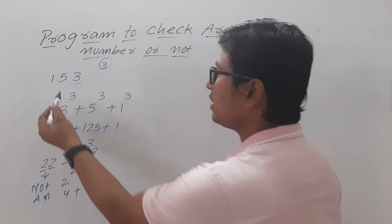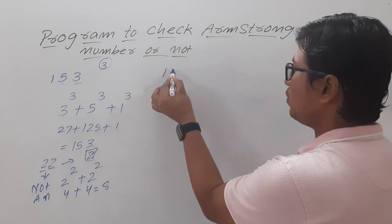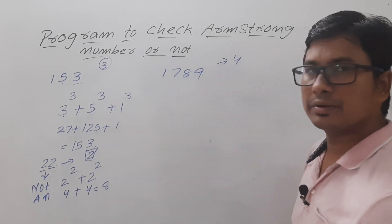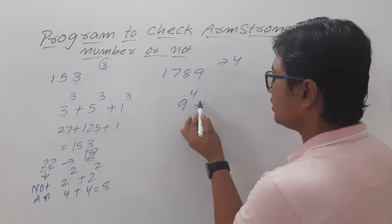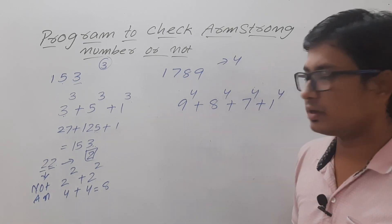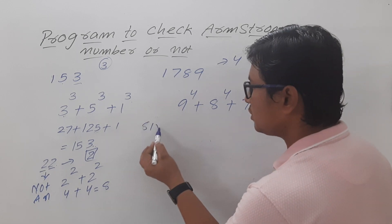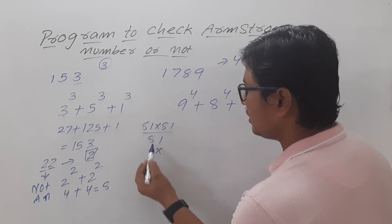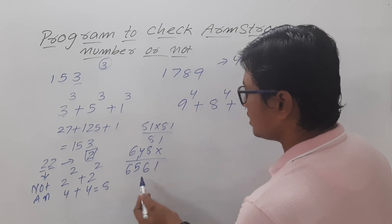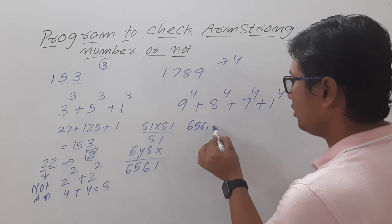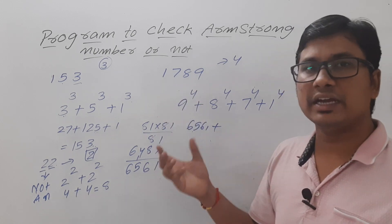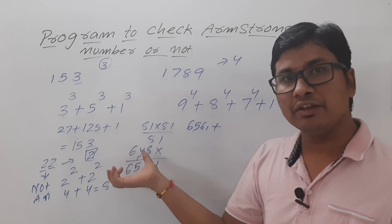153 is an Armstrong number. Let me discuss one more example: 1789. The number of digits is 4, so: 9⁴ + 8⁴ + 7⁴ + 1⁴. Now 9⁴ = 81 × 81 = 6561, which already gives a number greater than 1789, so the sum will not equal 1789. Therefore 1789 is not an Armstrong number.